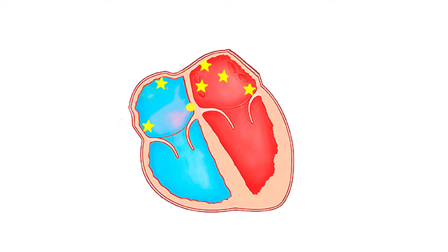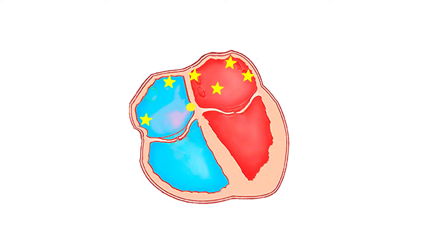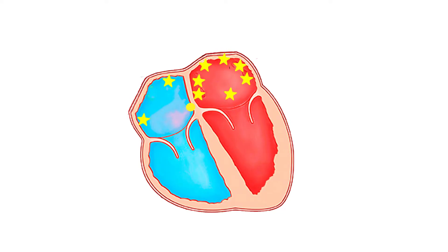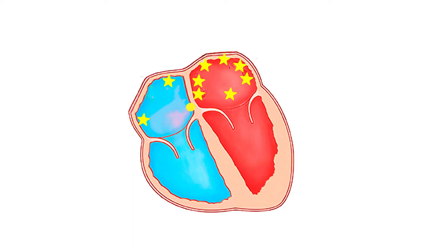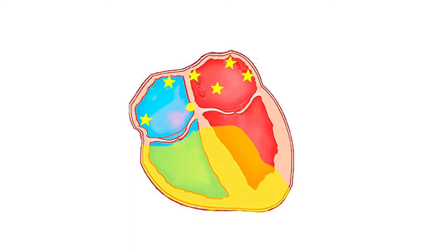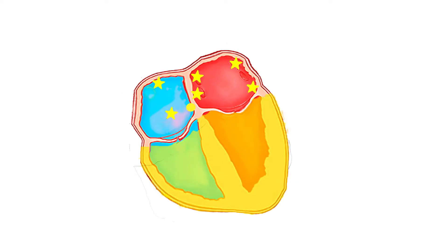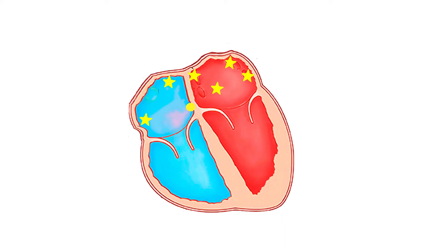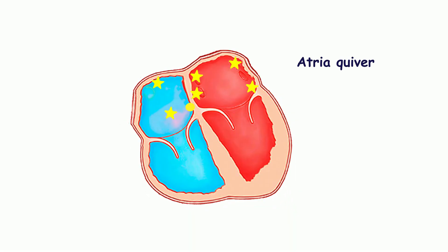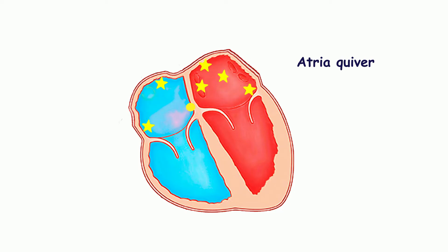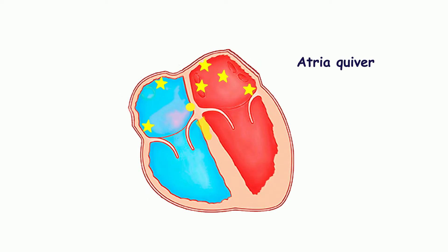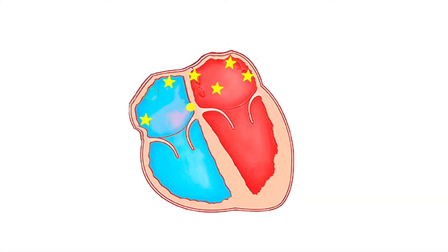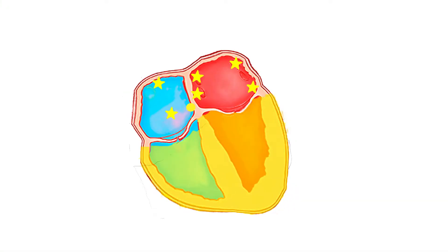In the case of atrial fibrillation, impulses originate not from the sinus node but from different parts of the atria. The impulses are very frequent. Atrial fibrillation describes when muscle fibers of the atria contract at different times. In such case, the atria don't contract cordially — they twitch, quiver, or fibrillate. There is no effective atrial contraction, but only many uncoordinated muscle fiber contractions.